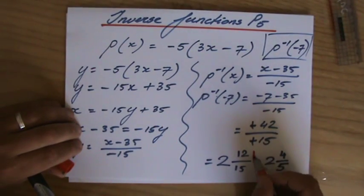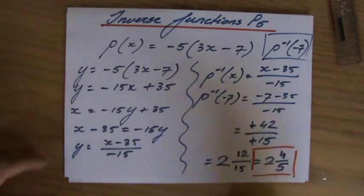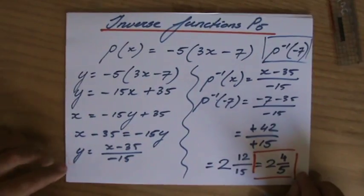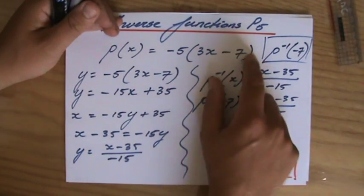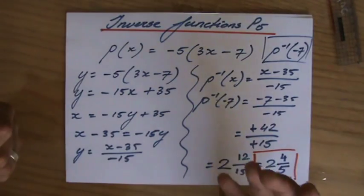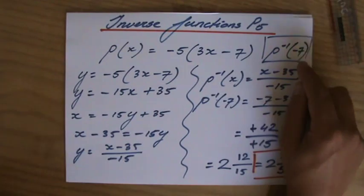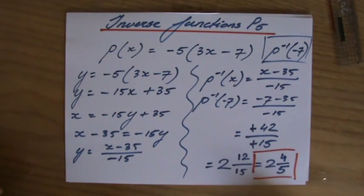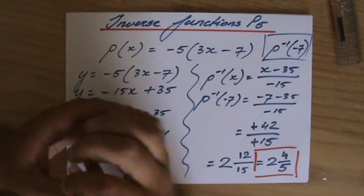Your calculator can do that for you, however it is important that you are able to do it by yourself as well. So for the function P = -5(3x - 7), the inverse function equals (x - 35)/-15, and to evaluate for -7 you get 2 and 4/5. I hope that was useful, and we can go now to composite functions. See you.